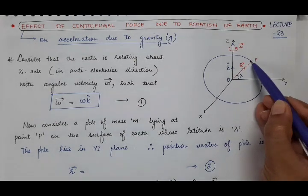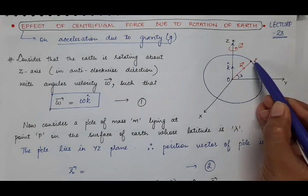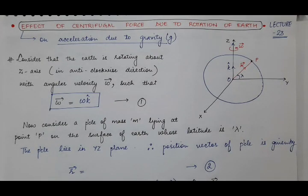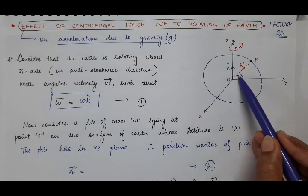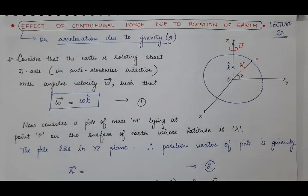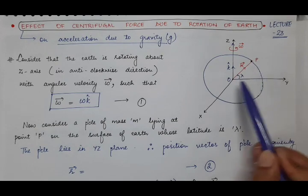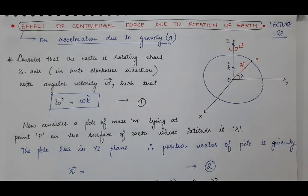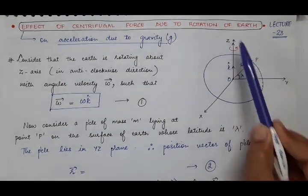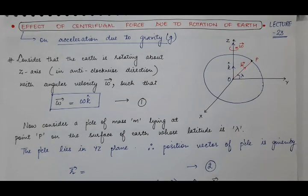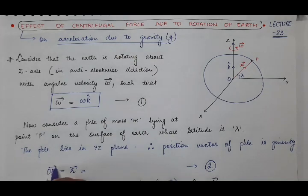Now consider any particle of mass small m lying at point P on the surface of the Earth. The angle of latitude is lambda — the angle of the position vector of the particle with the equator. Suppose r-vector is the position vector of the particle, given by OP vector.